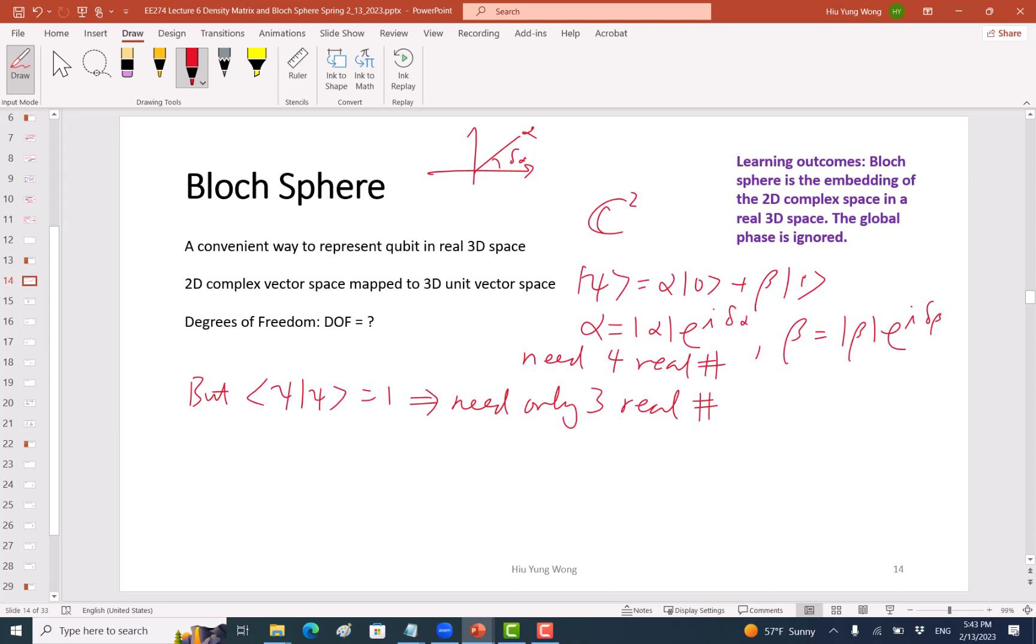So with that, let me rewrite it. Psi equals to alpha magnitude e to the I delta alpha zero plus beta magnitude e to the power I delta beta one, with alpha square plus beta square equal to one. This is what you mean here. And I need three real numbers.